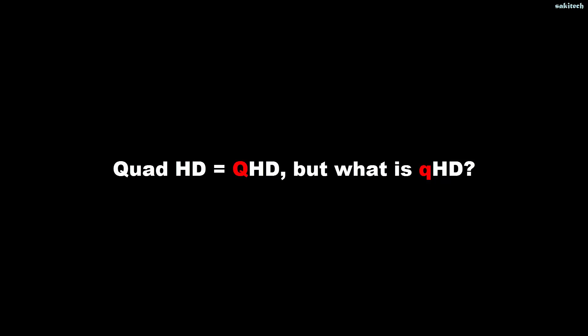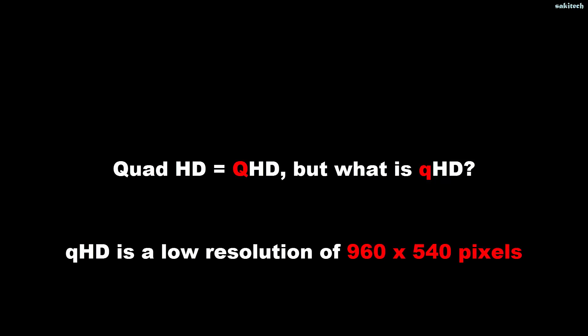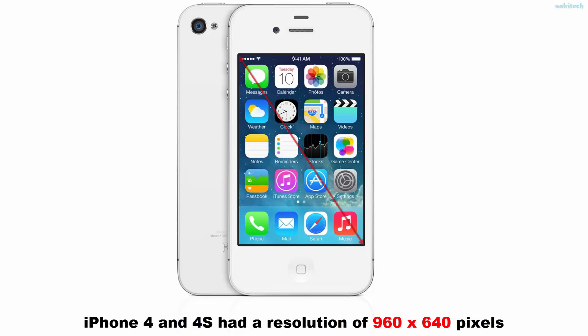Now, the uppercase QHD is simply a shorter version of Quad HD, but the lowercase qHD is actually a very old resolution that translates to 960 by 540, also known as 540p. Interestingly, the iPhone 4 and 4S had a resolution of 960 by 640, which is almost qHD but not quite.